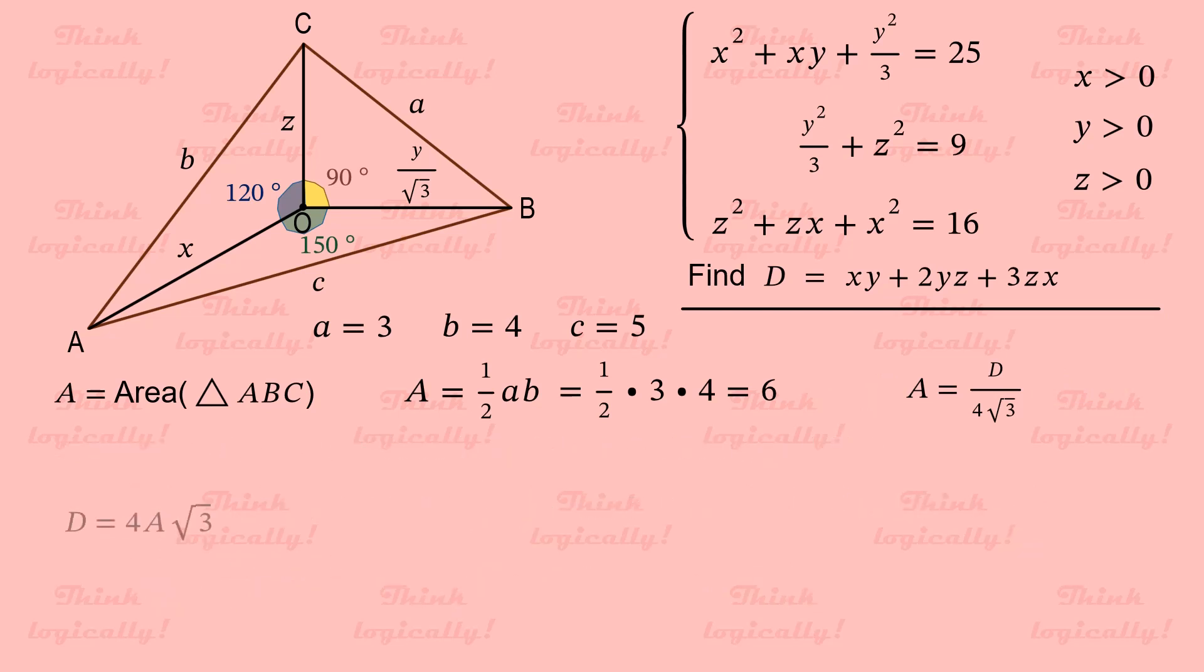Therefore, d equals 4a times square root of 3. But the value of a is known. It is 6. Therefore, d is 24 square root of 3. This is the answer. And the end.